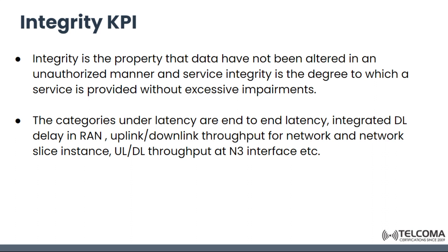Integrity KPI: integrity is the property that data have not been altered in an unauthorized manner. Service integrity is the degree to which the service is provided without excessive impairments. The categories under integrity include latency such as end-to-end latency, integrated downlink delay in RAN, uplink and downlink throughput for the network and network slice instance, and uplink and downlink throughput at the N3 interface.